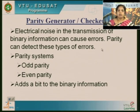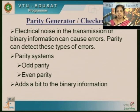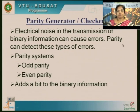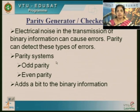To detect or check these types of errors, we need a mechanism. Whenever the original bit is sent, it may be corrupted or altered due to noise. We need to detect these errors. We call this parity — we add an extra bit called a parity bit to detect these types of errors. We have two types: odd parity and even parity.